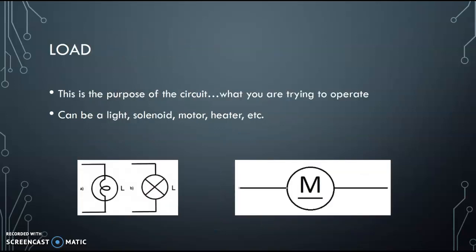Now we've got the load. This is the purpose of the circuit. This is what you're trying to operate. It could be light, solenoid, motor, heater, etc. This is basically the whole purpose of the electrical circuit. And this item should consume most of the voltage drop that the circuit has, outside of a little bit of resistance and switches and wires.